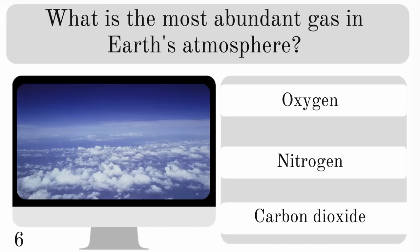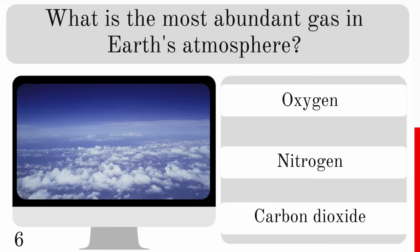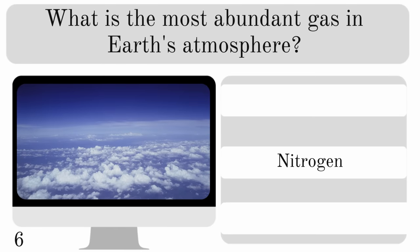What is the most abundant gas in Earth's atmosphere? Is it oxygen, nitrogen or carbon dioxide? The most abundant is nitrogen.